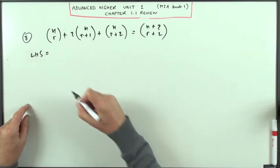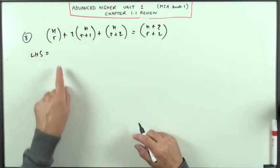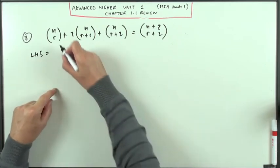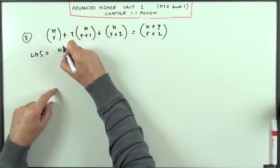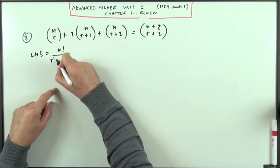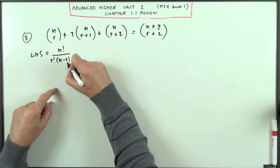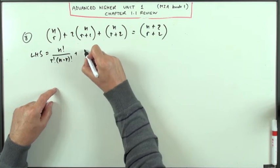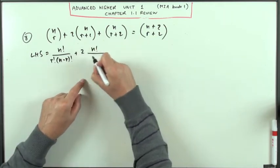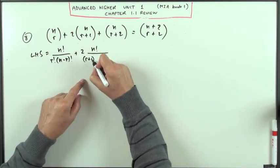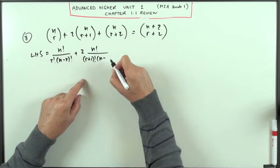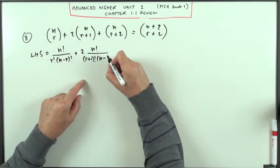I'll start off with the left hand side. It's going to take quite a bit of space. Spelling each of these out, you've got this. n choose r means n factorial over r factorial times n minus r factorial plus two times n factorial over r plus one factorial times n minus the r plus one factorial.